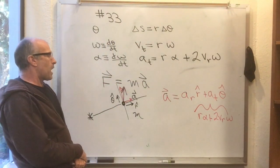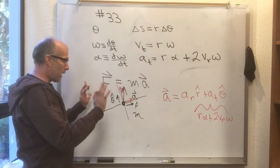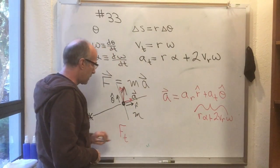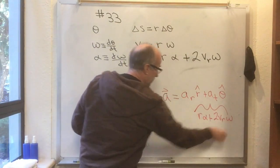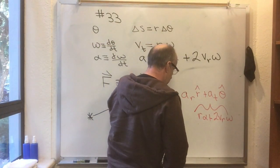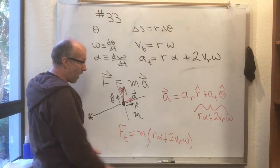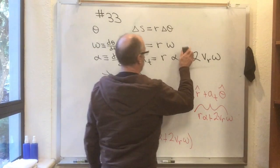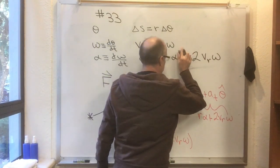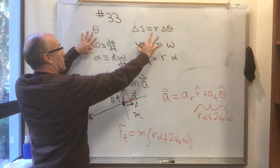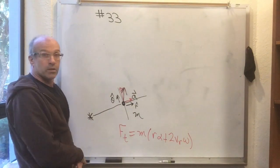If I take the tangential component of both sides of F equals ma, I get f_tangential equals m times a_tangential, which is r alpha plus 2 v_r omega. Now, I'm never going to give you a problem with an expanding radius, so forget that correction term. That's the kind of formula we'll work with generally speaking. So here's how I'm going to use this formula.